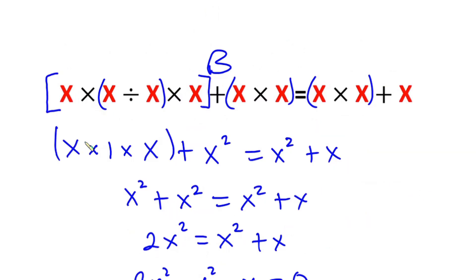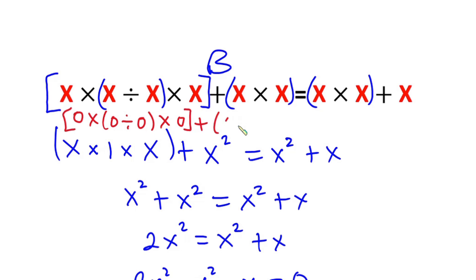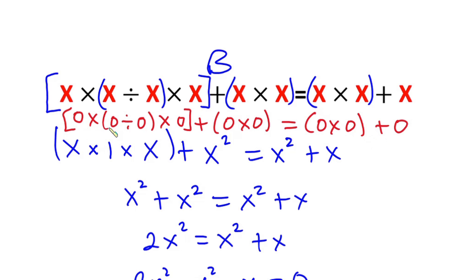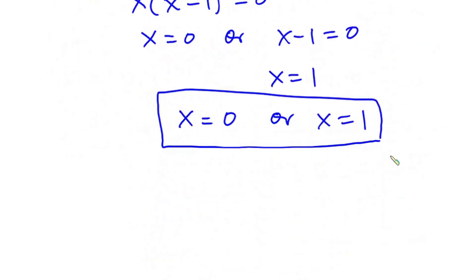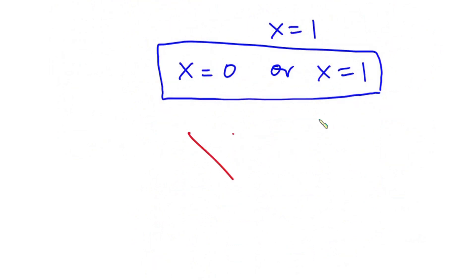Now according to contestant B, the value for x includes 0. So plugging 0 into this problem, we have 0 times 0 divided by 0, times 0 plus 0 times 0, equals 0 times 0 plus 0. Starting from the small bracket first, you can see that we have 0 divided by 0, which is indeterminate. This ends the argument for x being 0.